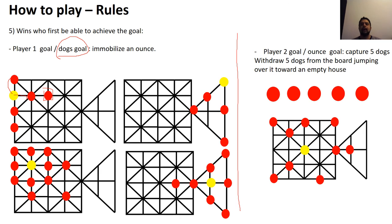And the ounce goal, we will see now. Just the ounce reach five dogs capture. Five dogs jumping over. Five dogs here. And when this dog is dragged dropped out of the board game, the ounce won the game.